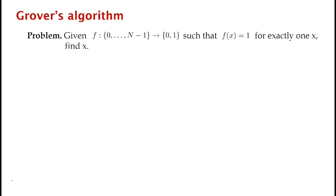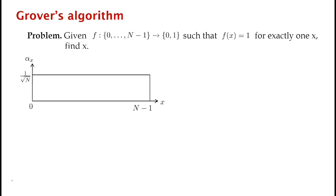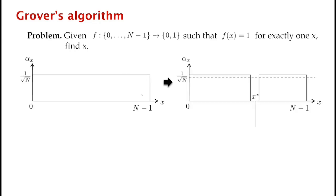Now let me show you how Grover's algorithm works given these two primitives. Initially we know nothing about the marked element, so we start with all amplitudes equal to 1 over square root n. Then we do a phase inversion. The marked element, instead of having amplitude 1 over square root n, now has amplitude minus 1 over square root n.